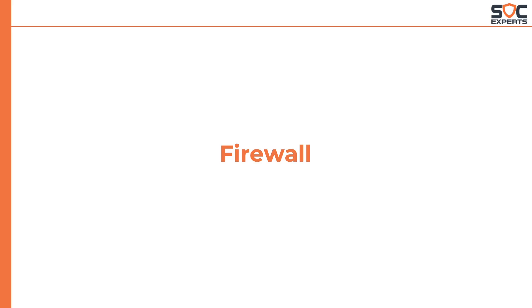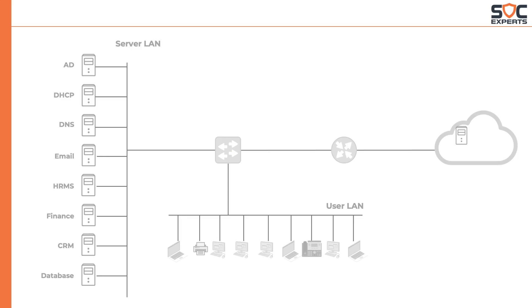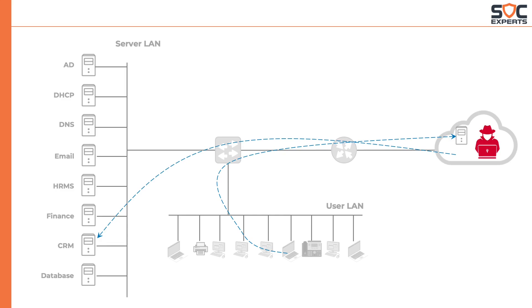In the network architecture we have established, there might be a need that our users want to communicate to servers in the internet. Similarly, we might want to let customers access a few of our servers. But the internet also has hackers who might harm our servers. So how do we stop the malicious actors from accessing our network? This is where the firewall helps.